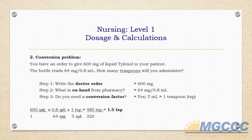The second type of problem is called a conversion problem. Here's the problem: you have an order to give 600 milligrams of liquid Tylenol to your patient. The bottle reads 64 milligrams per 0.8 milliliters. How many teaspoons will you administer? In this problem, we're going from metric to English conversions. Step one: write the doctor's order, 600 milligrams. Step two: what's on hand — 64 milligrams per 0.8 milliliters. Step three: do you need a conversion factor? Yes. The conversion factor is 5 milliliters equals 1 teaspoon.